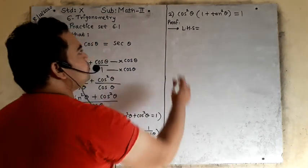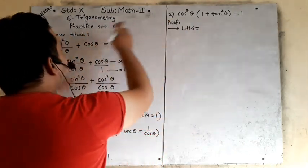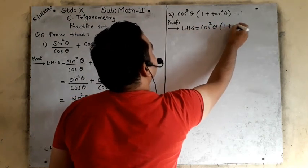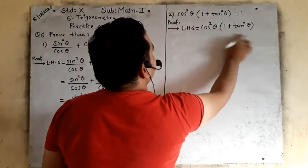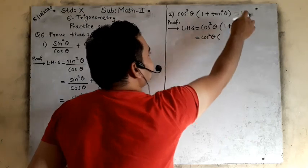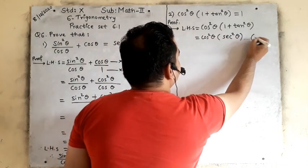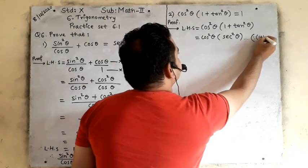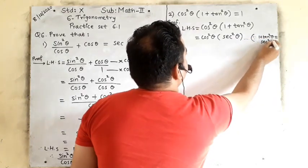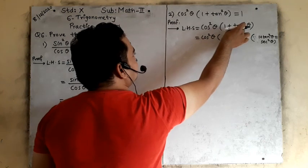Similarly, question number 2: cos square theta multiplied by (1 plus tan square theta) equals 1. We have to prove this, so we take only the left hand side: cos square theta multiplied by (1 plus tan square theta). We know the trigonometric identity that 1 plus tan square theta equals sec square theta, so we substitute sec square theta in place of (1 plus tan square theta).